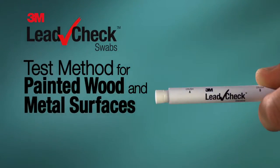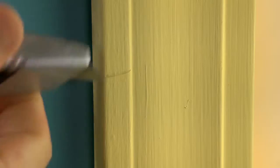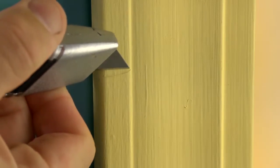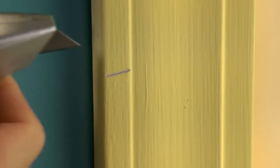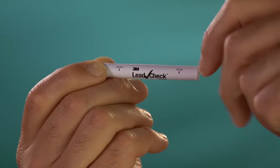This test method is for testing painted wood and metal surfaces for the presence of lead. For wood surfaces like moldings and window frames, use the clean utility knife to cut through the paint layers to the bare substrate. Now you may prepare to activate the 3M LeadCheck swab.